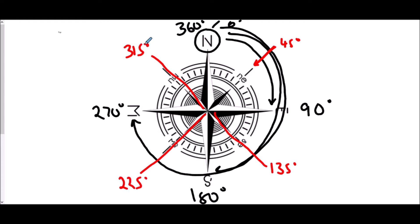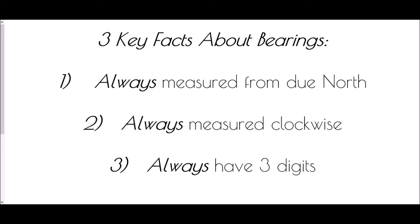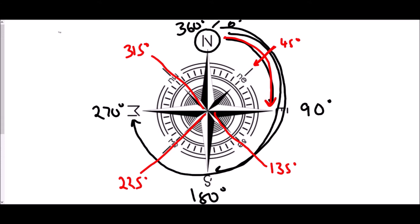Each of those directions can be measured as an angle from north, and importantly they are always measured clockwise. The rules for bearings state that they are always measured from due north, always measured clockwise, and always have three digits. Most of these angles already have three digits, but 90 degrees only has two. To make it three digits we place a zero at the front: 090. Similarly 45 degrees becomes 045, and zero degrees becomes 000.